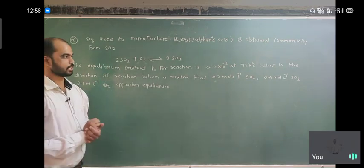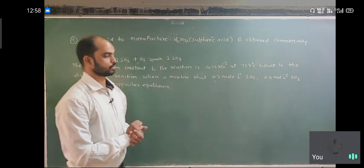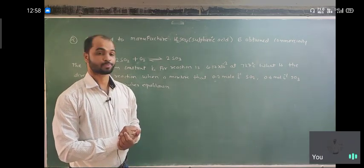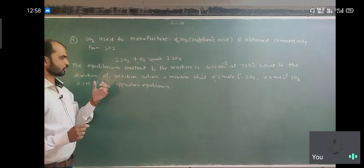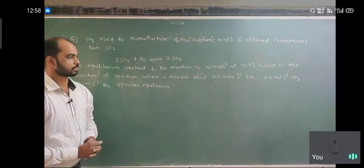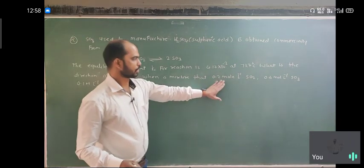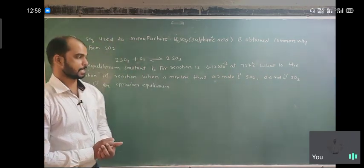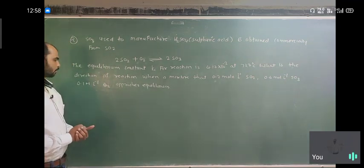What is the direction of reaction when reaction mixture that contains 0.2 mol per liter SO2, 0.4 mol per liter SO3, and 0.1 mol per liter O2 approaches equilibrium?